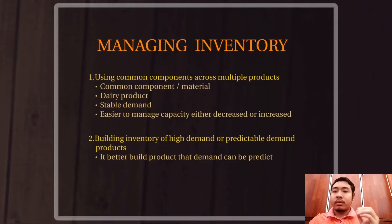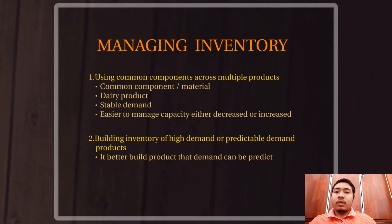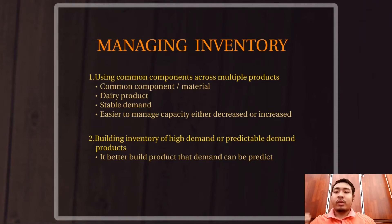As we know, milk can be used to produce yogurt, cheese, and flavored milk — so the base material of these products is milk. By using this one base material to produce various products, the demand for milk becomes stable. This stable demand for milk makes it easier for the manufacturer to manage their inventory, either increasing or decreasing it. In this situation, the company will increase their inventory of milk.